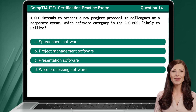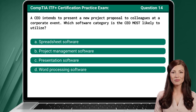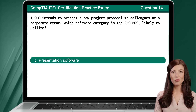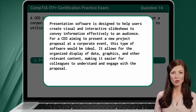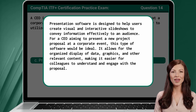Question 14. A CEO intends to present a new project proposal to colleagues at a corporate event. Which software category is the CEO most likely to utilize? The answer is C: Presentation software. Presentation software is designed to help users create visual and interactive slideshows to convey information effectively to an audience. For a CEO aiming to present a new project proposal at a corporate event, this type of software would be ideal, allowing for the organized display of data, graphics, and other relevant content, making it easier for colleagues to understand and engage with the proposal.